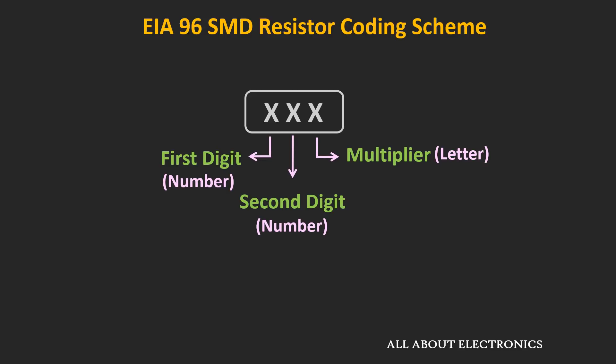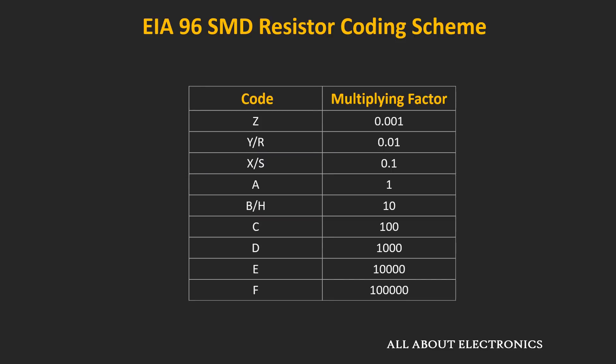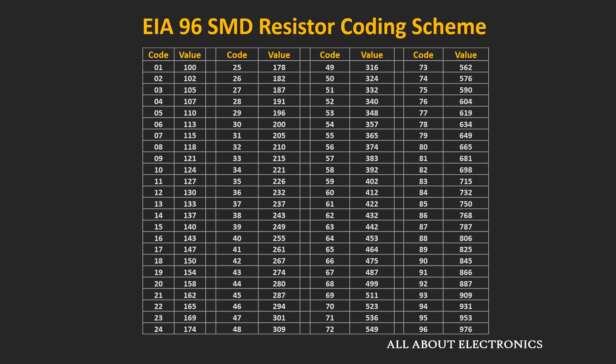Apart from the three- and four-digit coding schemes, a third type is used for high-precision resistors with 1% tolerance. In this scheme, three characters are used: the first two are numbers and the last is a letter. The first two digits define the three most significant digits of the resistor value, while the last letter defines the multiplying factor. A table provides the different letter codes and their corresponding multiplying factors, and another table maps the first two digits to their corresponding resistor values.